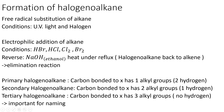This does not form a specific halogenoalkane — any can form, as seen in previous videos. The second method is electrophilic addition of an alkene; the conditions are just HBr, HCl, chlorine or bromine. You can form specific halogenoalkanes depending on the position of the R groups. There are no other conditions.